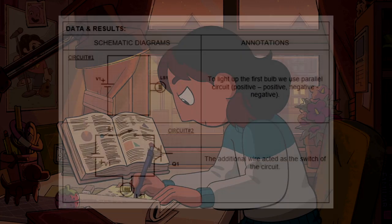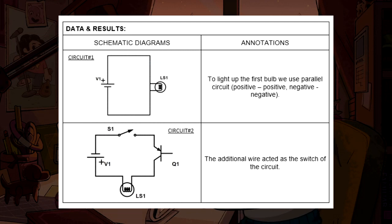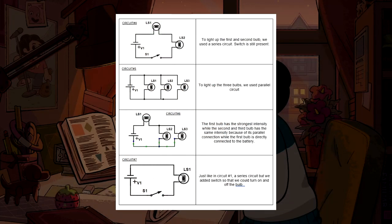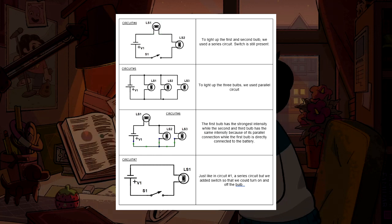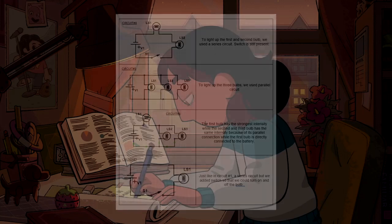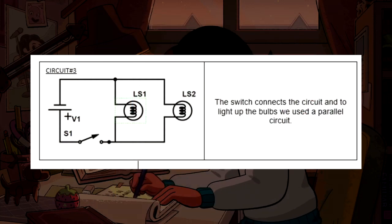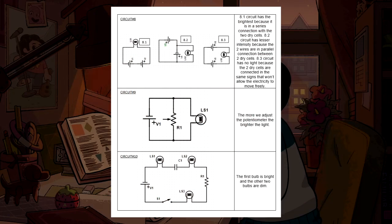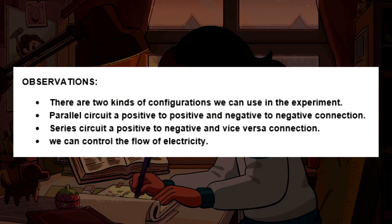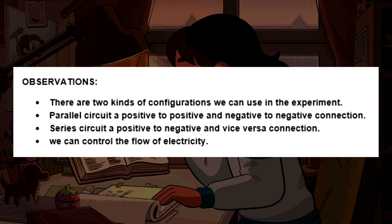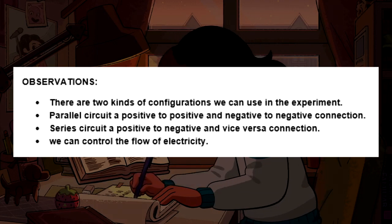Data and results. Observations. There are two kinds of configurations we can use in the experiment. Parallel circuit: a positive to positive and negative to negative connection. Series circuit: a positive to negative and vice versa connection. We can control the flow of electricity.